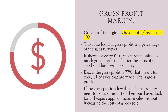For example, if the gross profit is 77%, that means for every one pound of sales that the business makes, 77p of it goes towards gross profit. Now, if the gross profit is low, then the business may need to reduce the cost of their purchases by either looking for a cheaper supplier or increasing their sales without increasing the cost of goods sold.